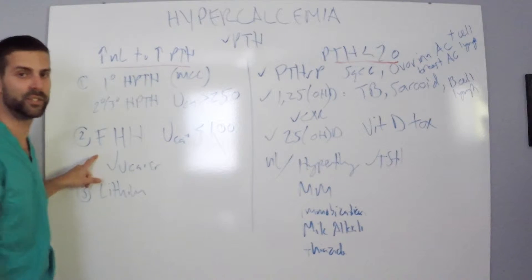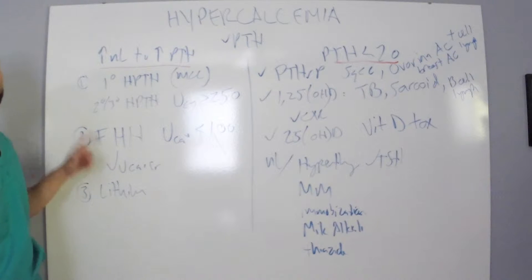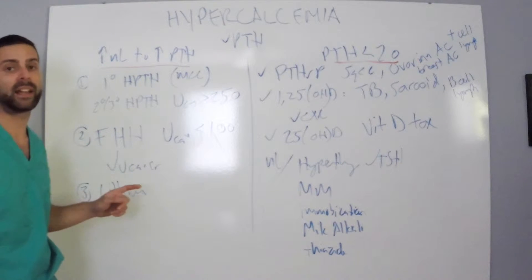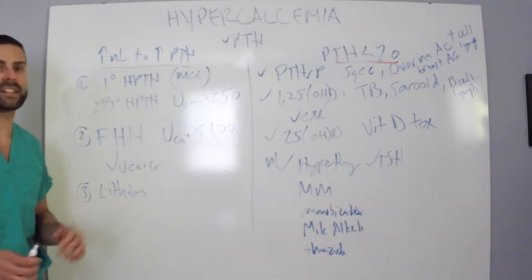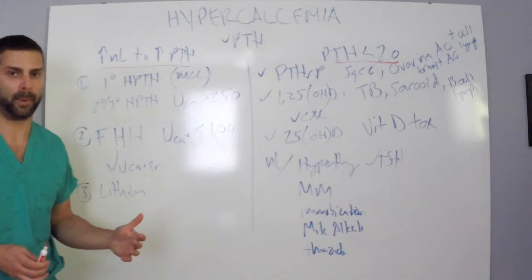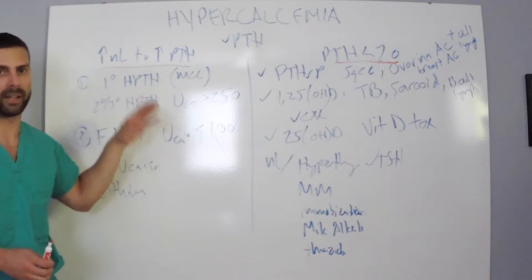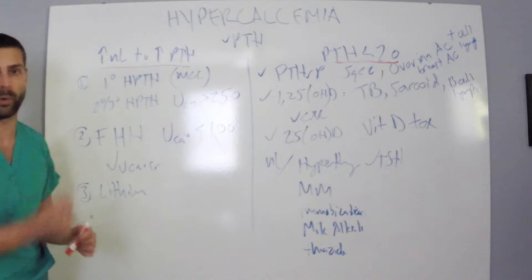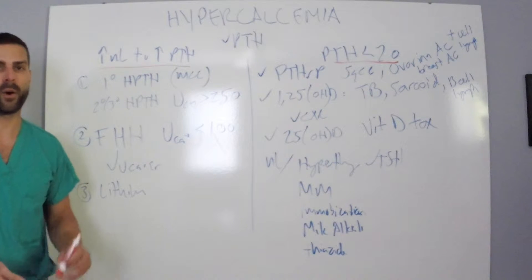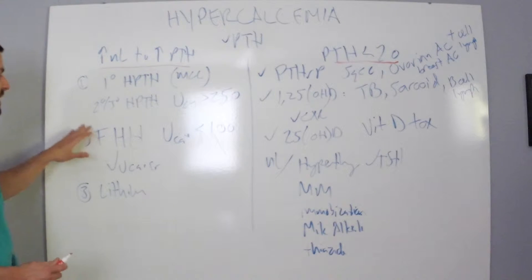For people who have this issue of familial hypercalcemic hypocalciuric, they're going to give you a patient who has other family members who have hypercalcemia, possibly kidney stones, whether it be a sibling, an uncle, a father. And if it's something regarding lithium, they're going to tell you the patient's on lithium.